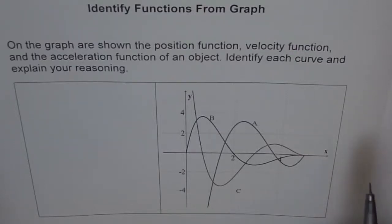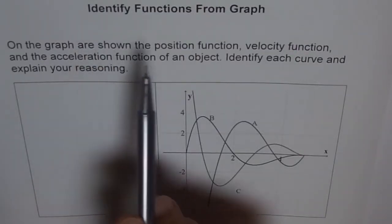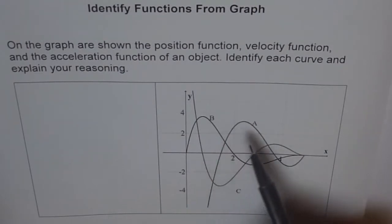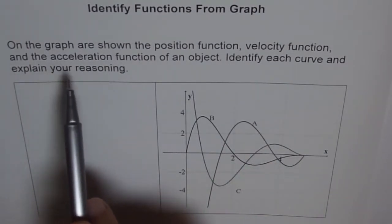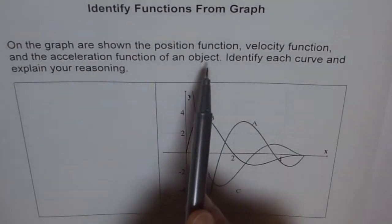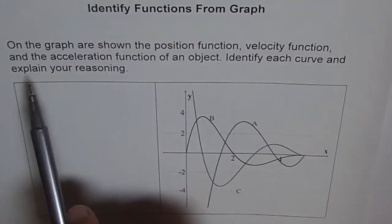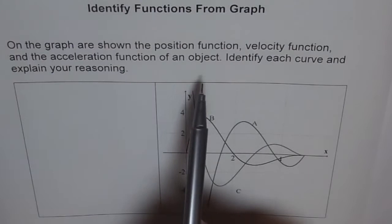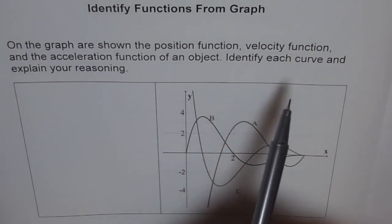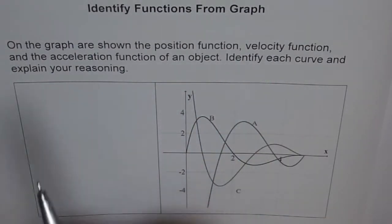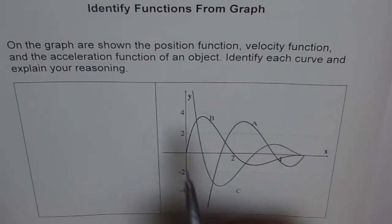This is a very interesting problem. Let's try to identify functions from the graph. So these are three different graphs here. On the graph are shown the position function, velocity function, and acceleration function of an object. Identify each curve and explain your reasoning. So we have position, velocity, and acceleration. So how are they related?